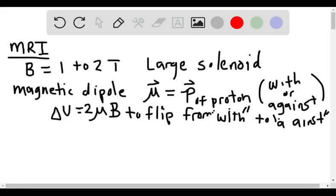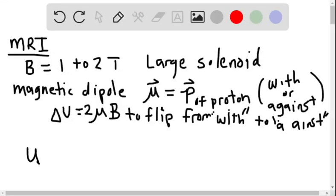In problem 55, we're told that the magnetic dipole moment of a proton is 1.41 times 10 to the negative 26 power joules per tesla.